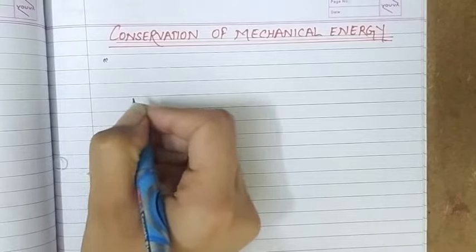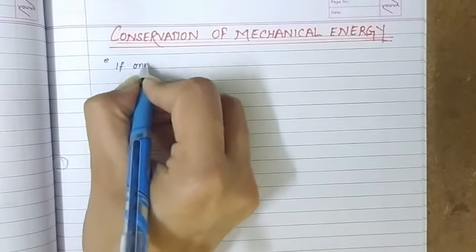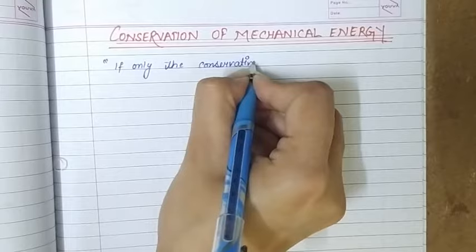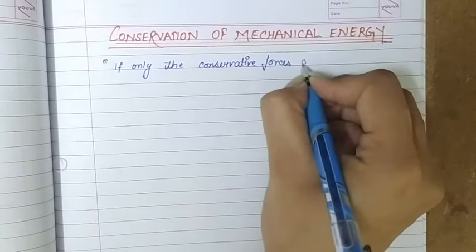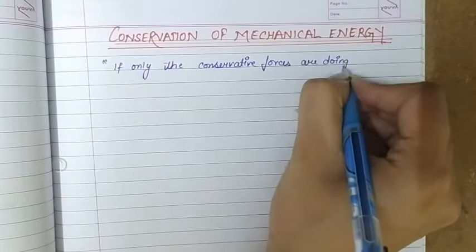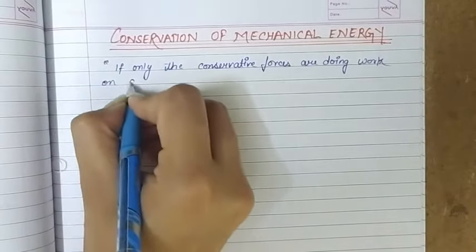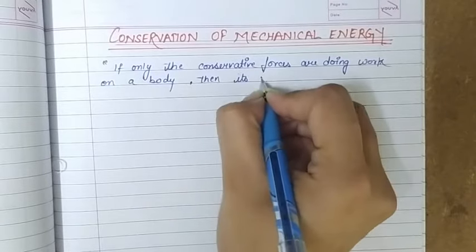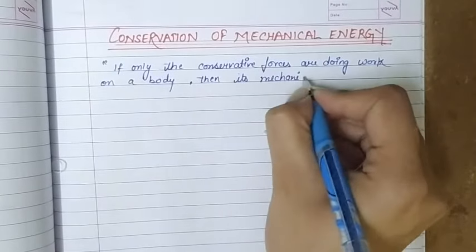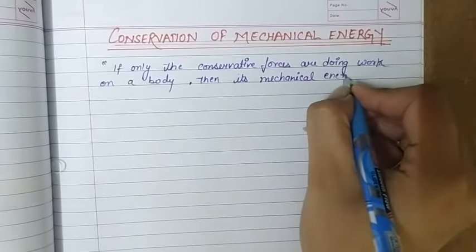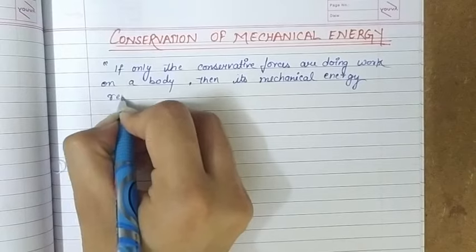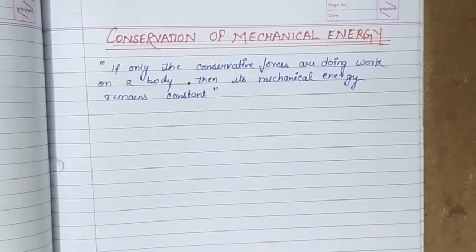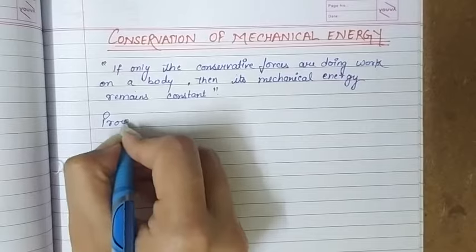So the statement for this principle is: if only the conservative forces are doing work on a body, then its mechanical energy — the total of kinetic and potential energy — remains constant. This is the principle of conservation of mechanical energy. Now we can also prove it.